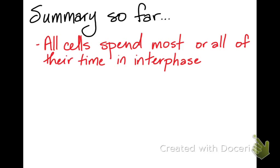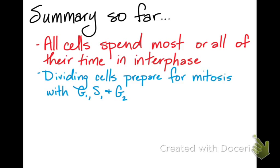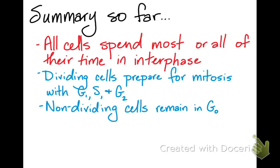All cells spend most or all of their time in interphase. Cells prepare for mitosis by going through the three phases of interphase: gap one, DNA synthesis, and gap two. Non-dividing cells remain in a pre-G1 phase that we call G0.